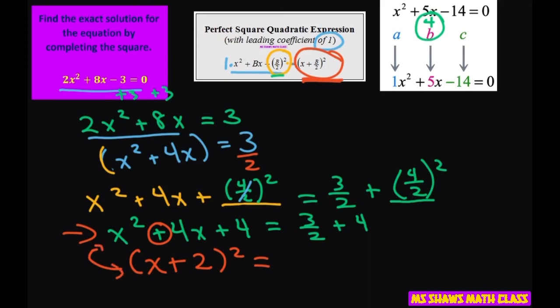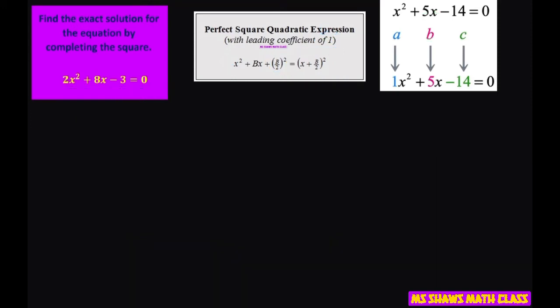Equals, now my common denominator is 2. So I'm going to put a 2 here. If I need a 2 there, I put it there. So that's going to be 3 plus 8. So this is going to be 11 divided by 2. So what we have is x plus 2 squared equals 11 divided by 2.